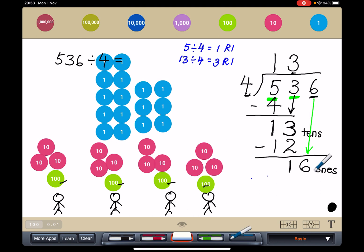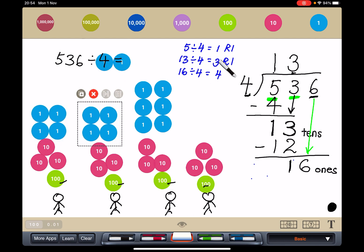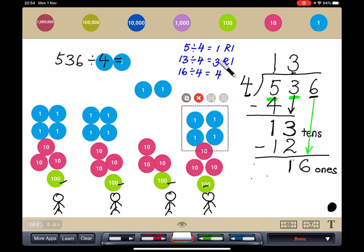Now, 16 divided by 4. How many can I give each person? I can give each person 4 exactly. No remainder. So let me show you. I'm going to give each person 4. 4, 4, 4, 4. And this person 4.